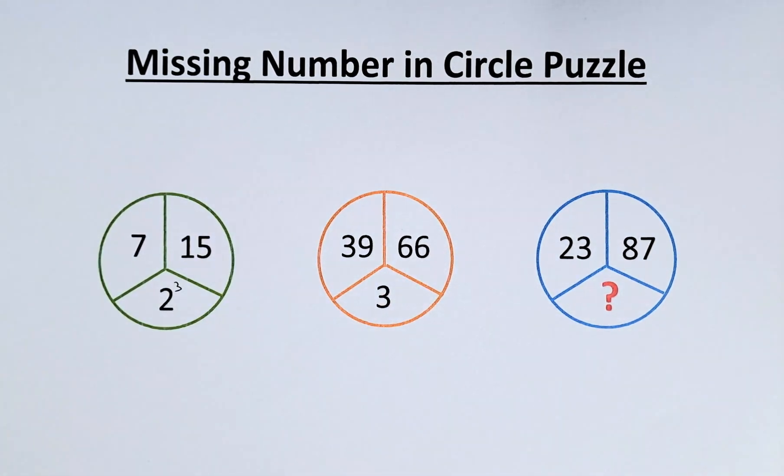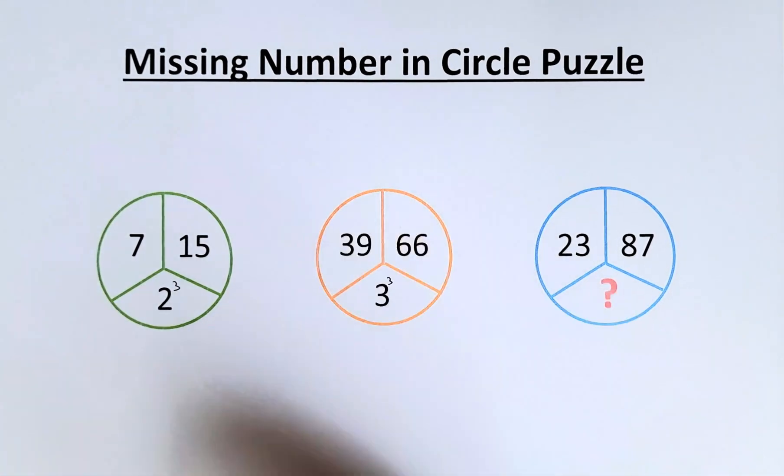Similarly, for the second circle, 66 minus 39, that will give you a total of 27. 27 is 3 to the power of 3.